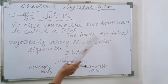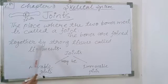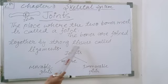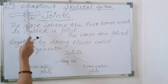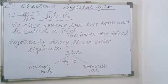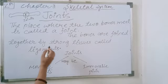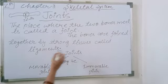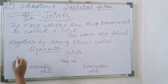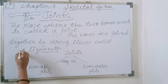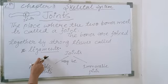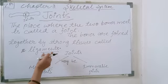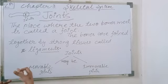The bones are joined together by strong tissue called ligaments. A ligament is the name of the strong tissue which helps to join two bones to each other.